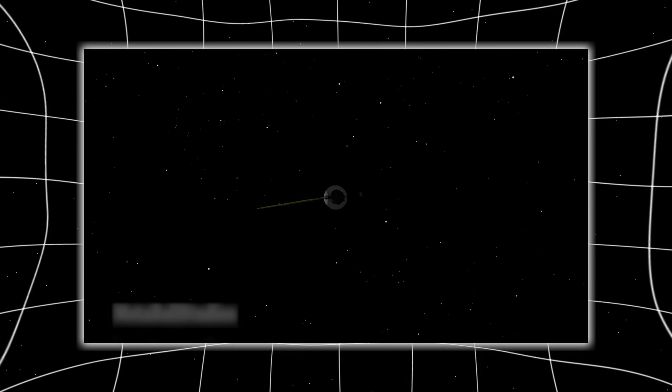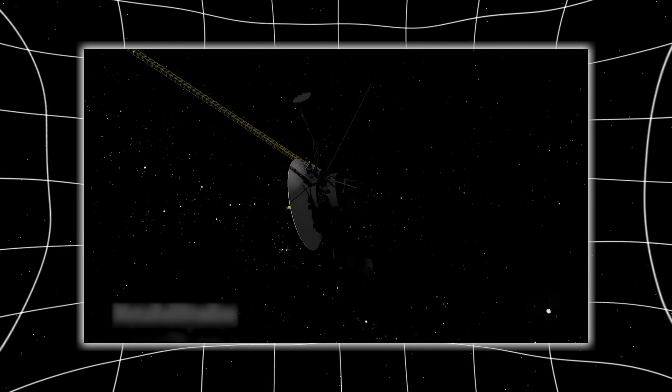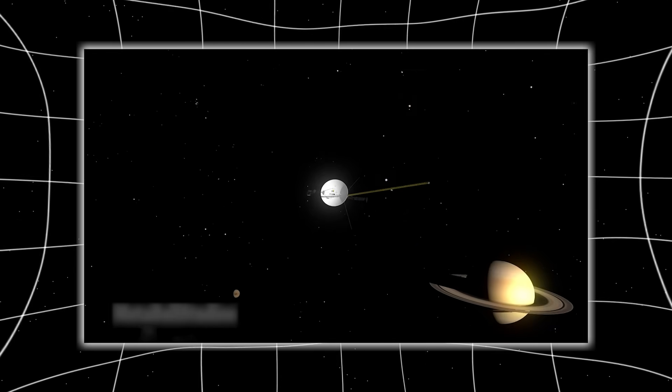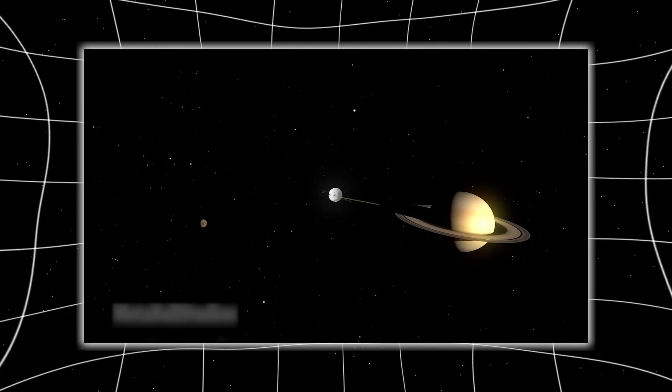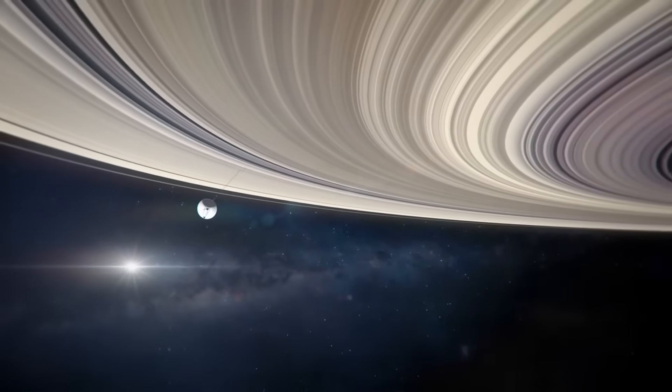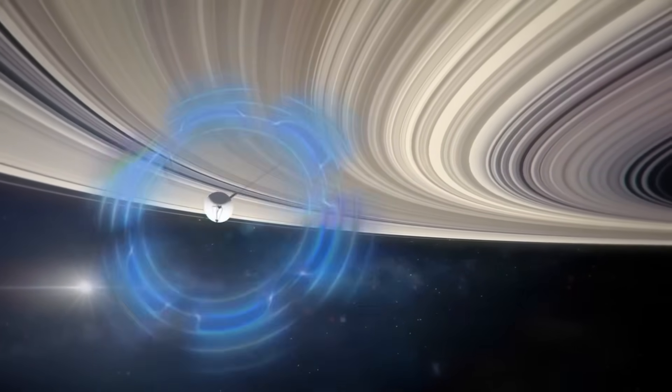Even after crossing the one light day milestone, Voyager remains astonishingly close to home by galactic standards. It will take centuries to reach the inner Oort cloud, and tens of millennia to reach its outer layers. This perspective reframes our expectations. Even the fastest probe we have ever launched is only beginning the first millimeter of a cosmic marathon. Voyager teaches us that interstellar space is not just vast, it is incomprehensibly so.